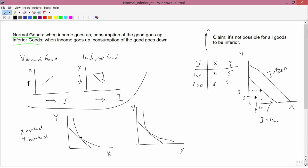In the first example, I want to graph X being normal and Y being normal. And if the initial position is here, I'm going to study an increase in income. Now, you should also understand what happens when there's a decrease in income, but I'm just going to do an increase in income here.